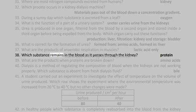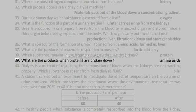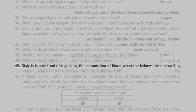38. Which substance remains in the blood as it passes through the kidney? Protein. 39. What are the products when proteins are broken down? Amino acids.